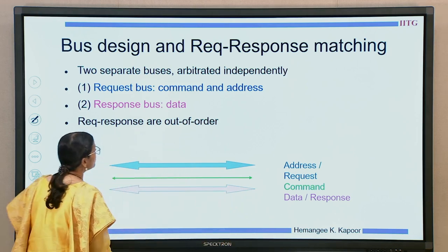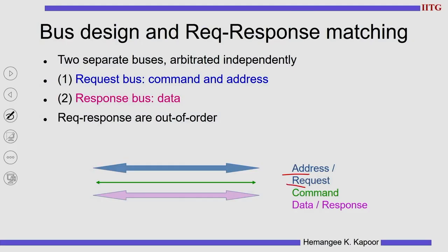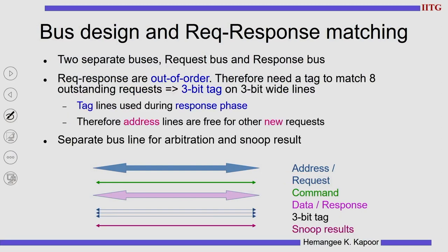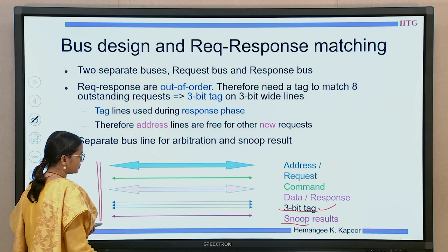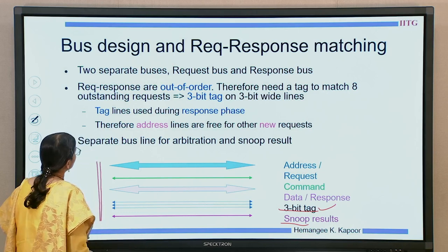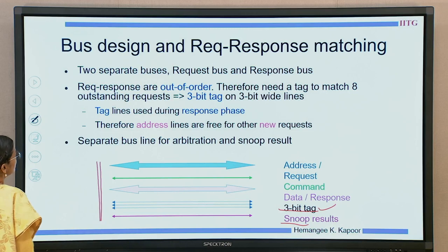The bus is now divided into an address bus (the blue color), the command bus (the green line), then the data response. In addition, you also need a 3-bit tag to match the request with the response, and then the snoop results. This is the complete structure of the bus. Initially we had clubbed address and data together and were worried only about snoop values with no tag field, but now we have this much infrastructure to handle.